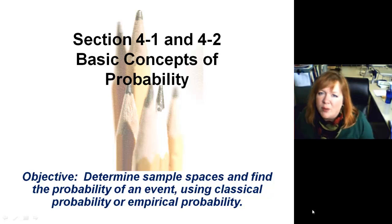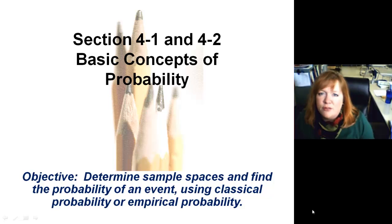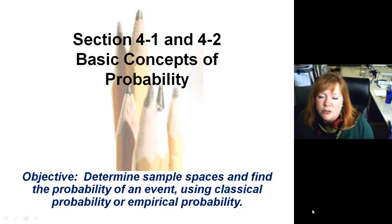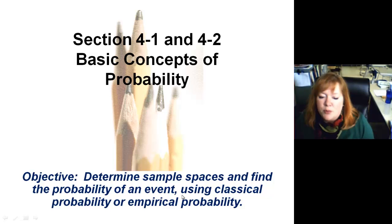I gave you a vocabulary sheet to fill out. You'll notice some of these slides we're going to go through — there's not a place for them on your pre-printed notes because you already did the vocabulary and are familiar with those words. But I'm still going to run through them. Our objective today is to determine the sample spaces and find the probability of an event using classical probability or empirical probability.